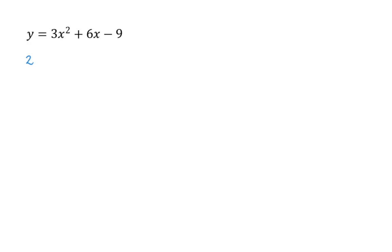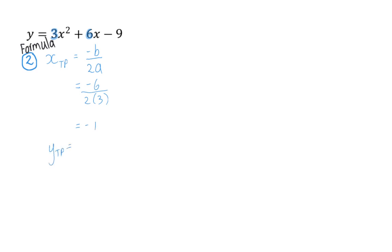For the second method to determine the x-value of the turning point, we use a formula derived from the first method. The formula is x equals minus b divided by 2a. In our example, the b-value is 6 and the a-value is 3, so we substitute to get minus 6 over 2 times 3, which gives us minus 1. To get the y-value of the turning point, we substitute minus 1 into the equation and once again get minus 12. So our turning point is again (−1, −12).